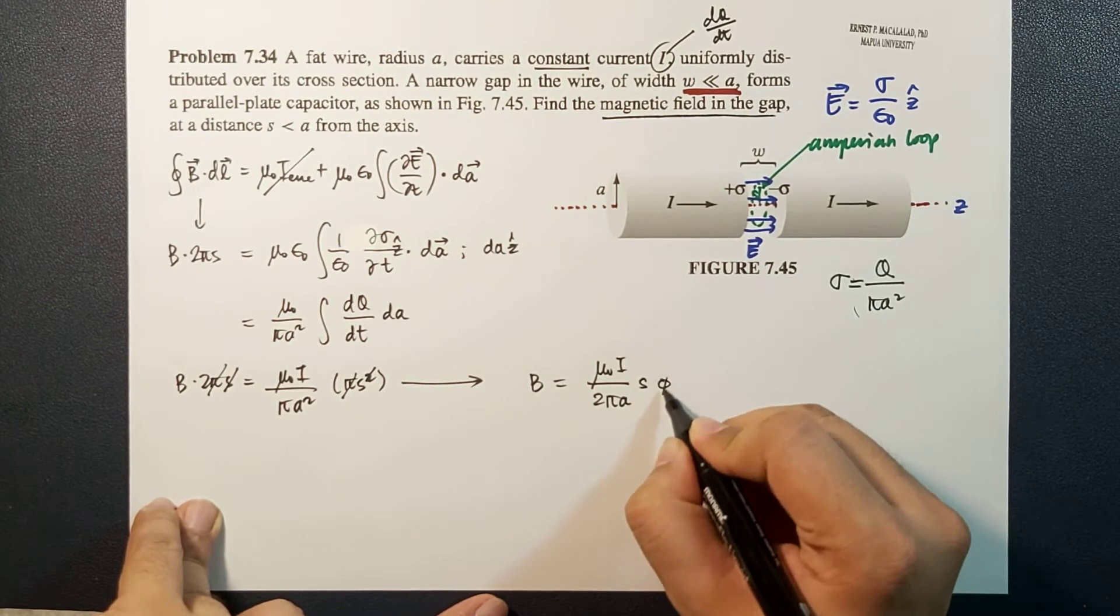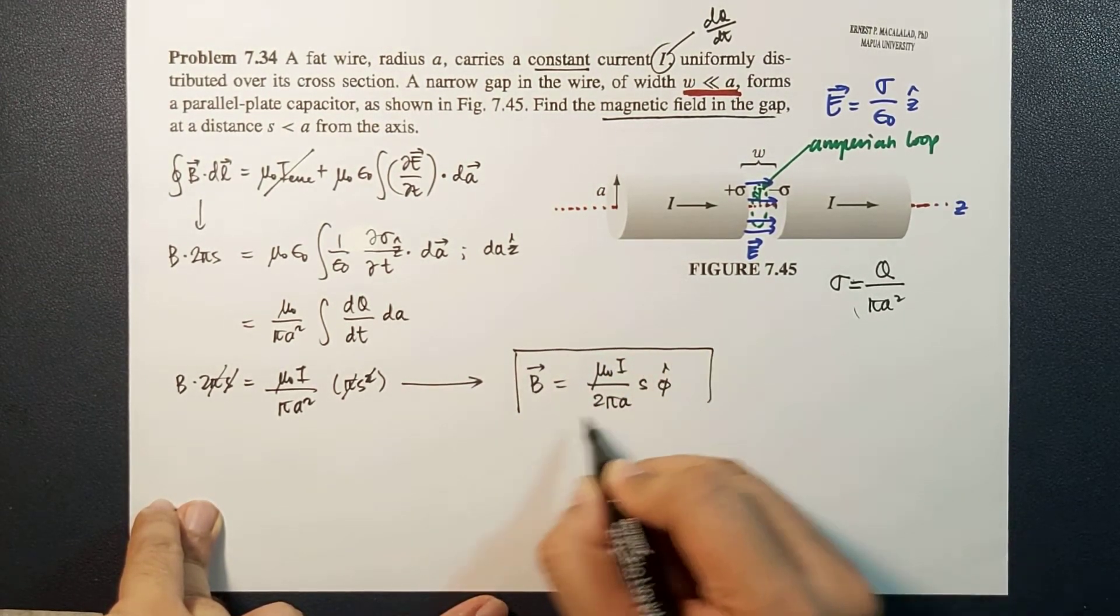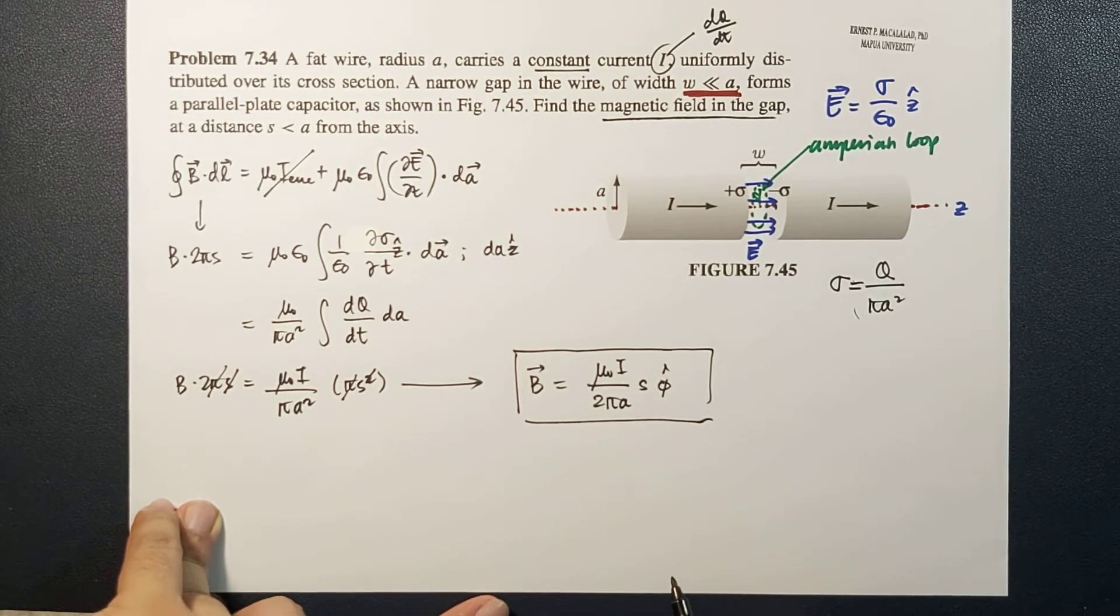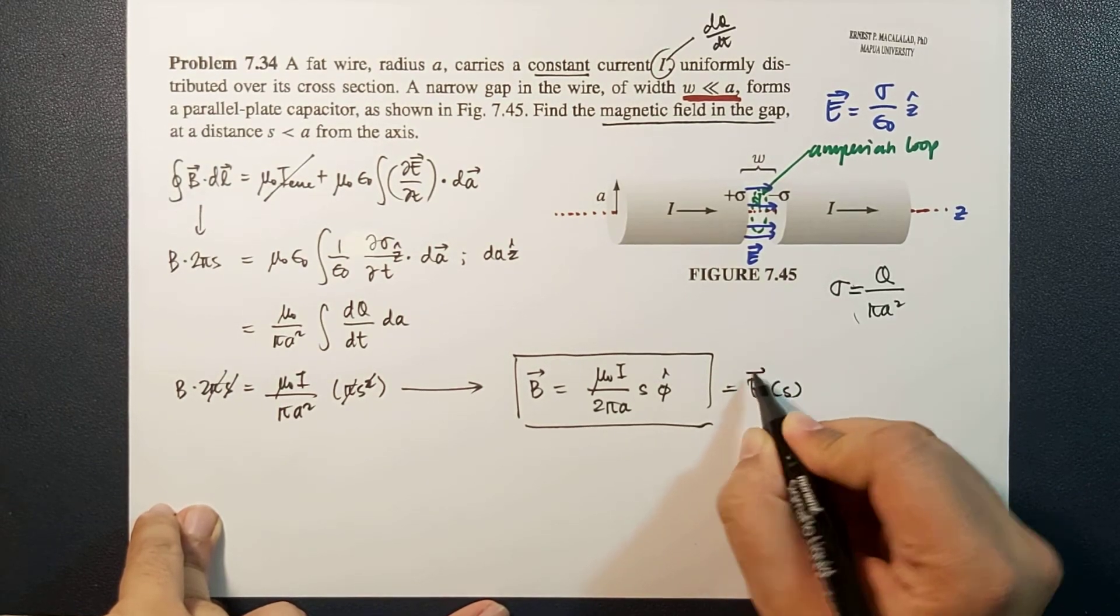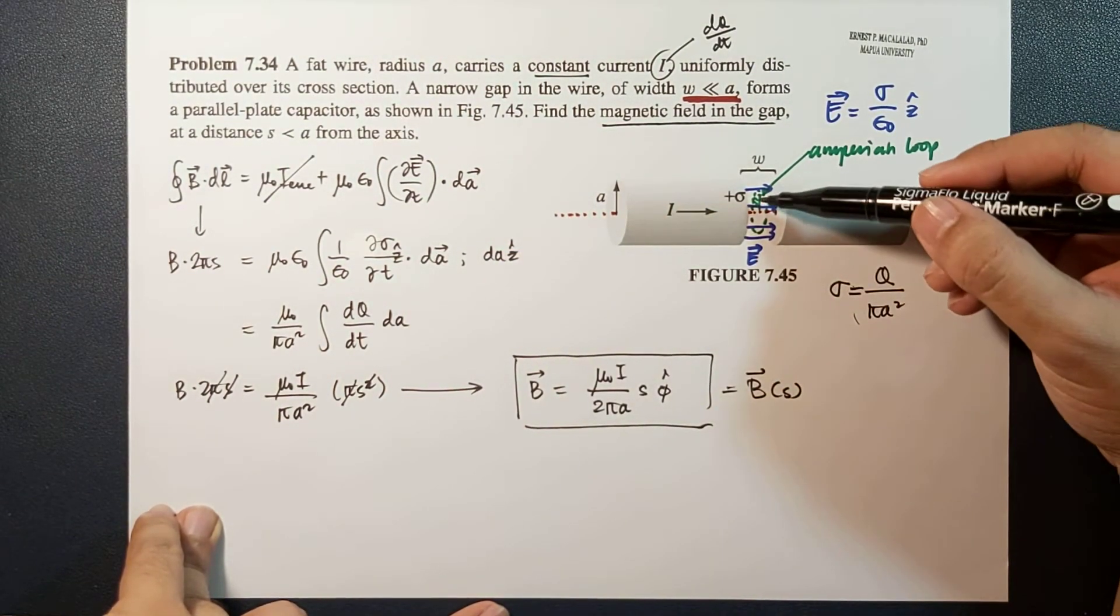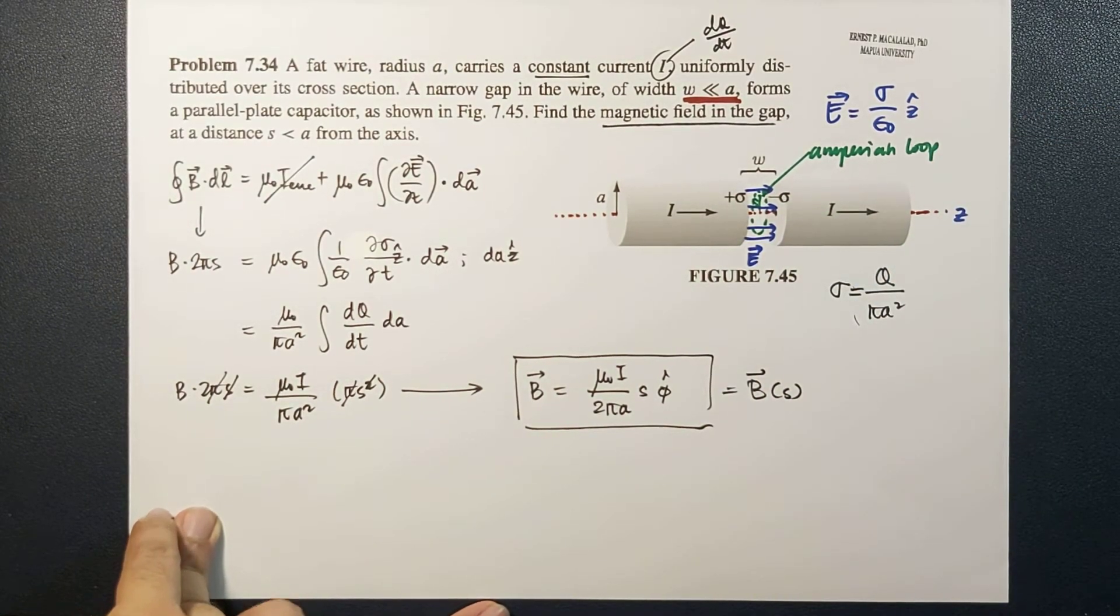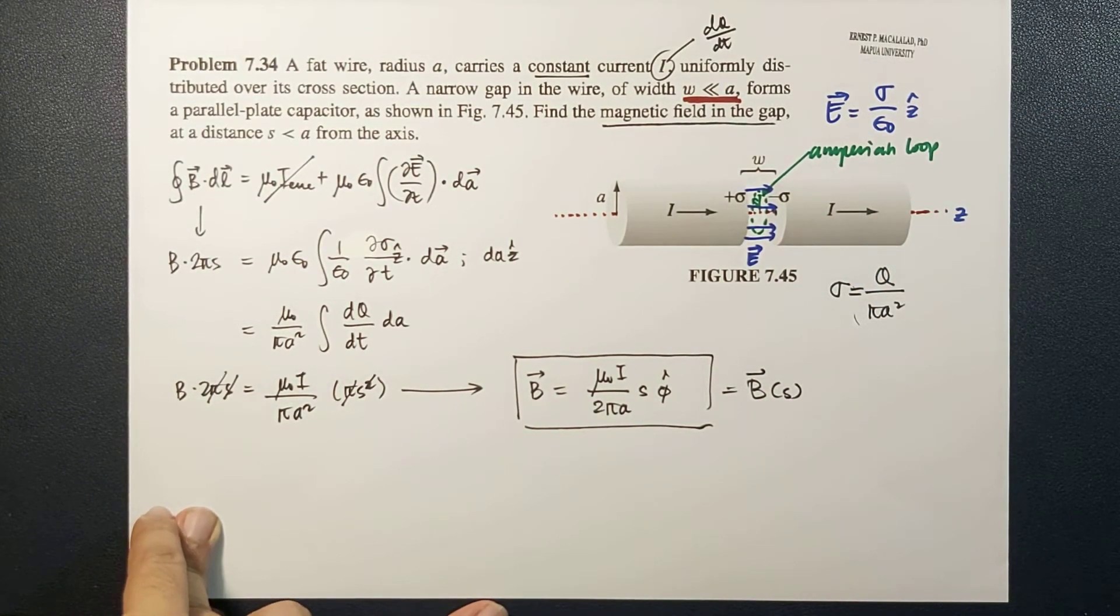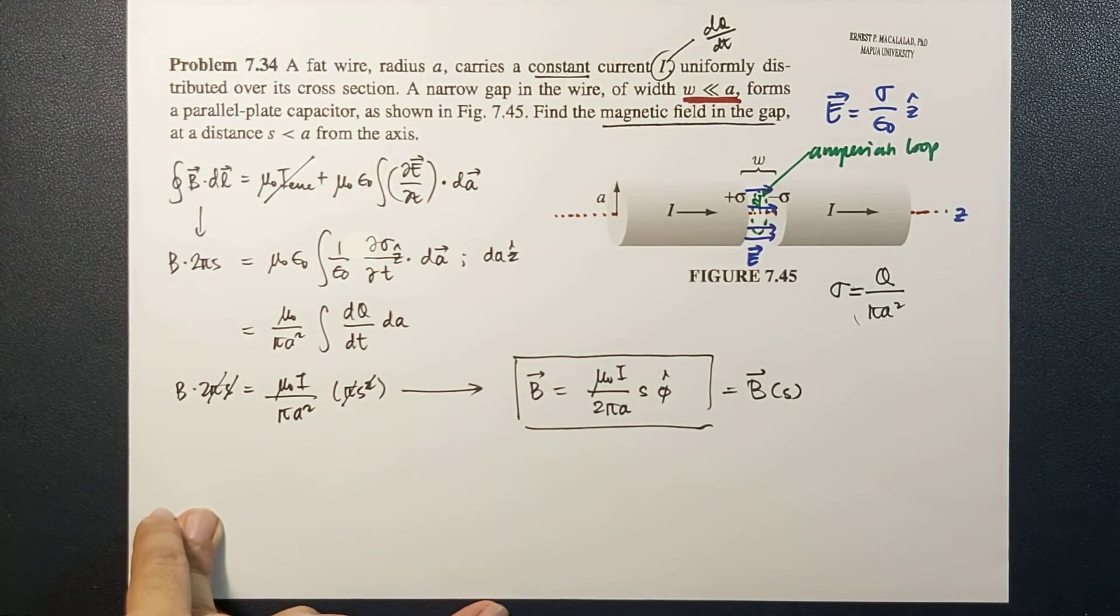So as you will notice, the resulting magnetic field varies with the distance of our point from the axis. So the farther you are from the axis, the larger the magnetic field. And it varies linearly. The rest is constant.